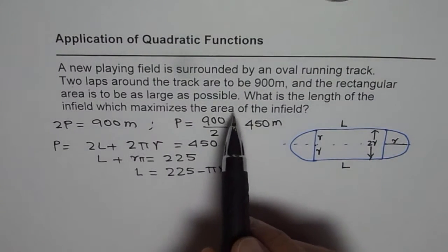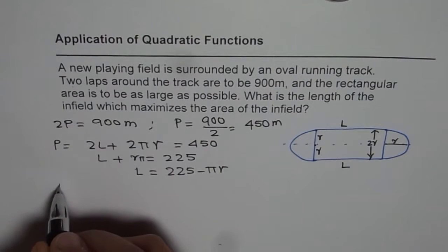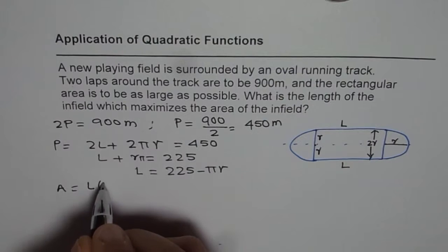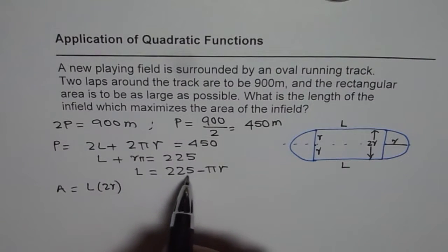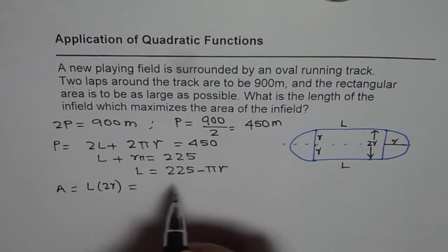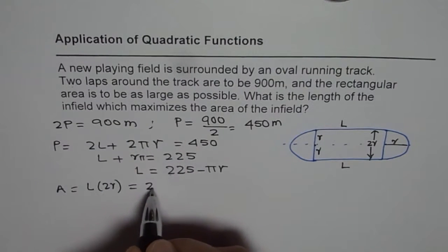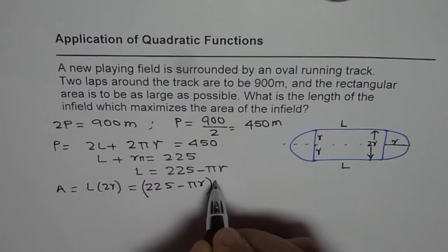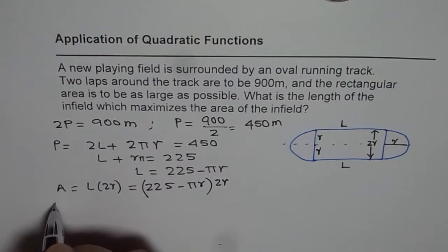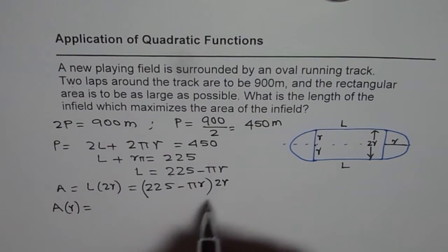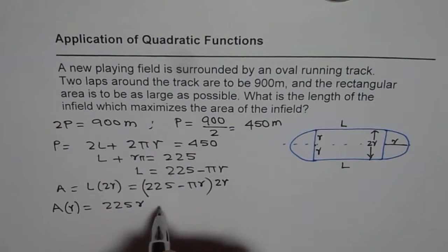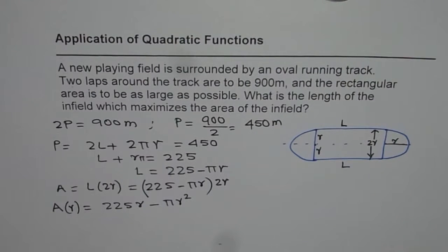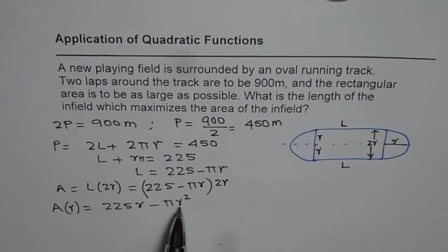Now the question is we need to maximize the area of infield. So what is the area of infield? Area is length into width which is length times 2R and we know length can be represented in terms of R using this relation. So we can write this as 225 minus πR times 2R. So area as a function of radius will be 225R minus πR square. So we have a quadratic equation in R.